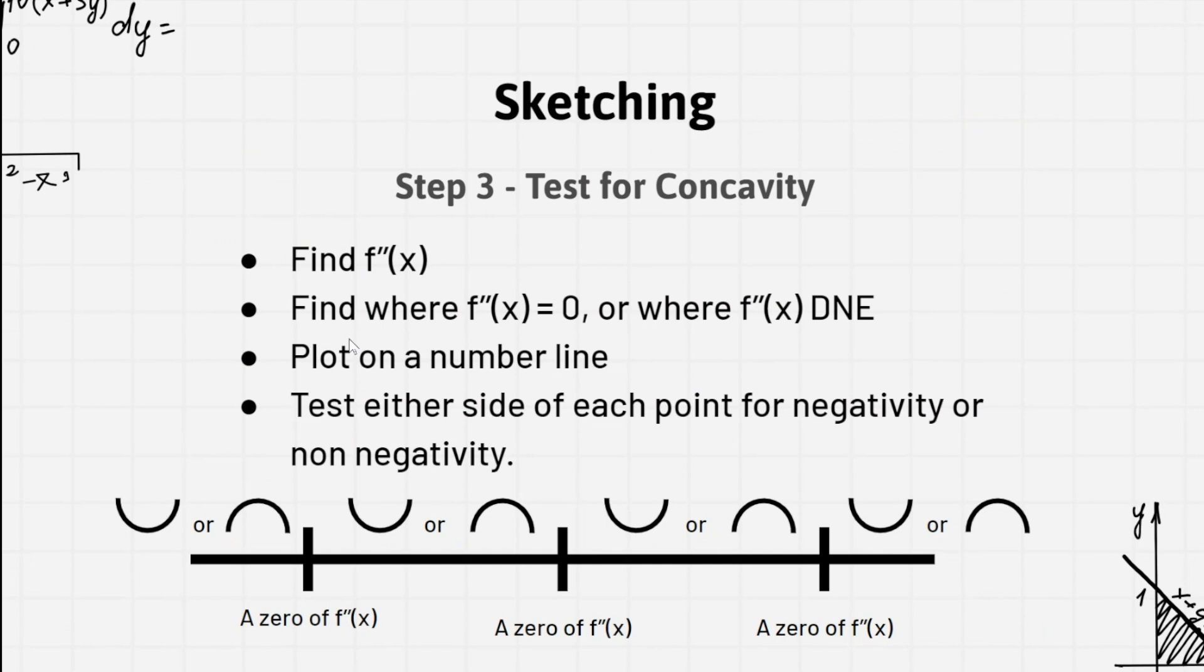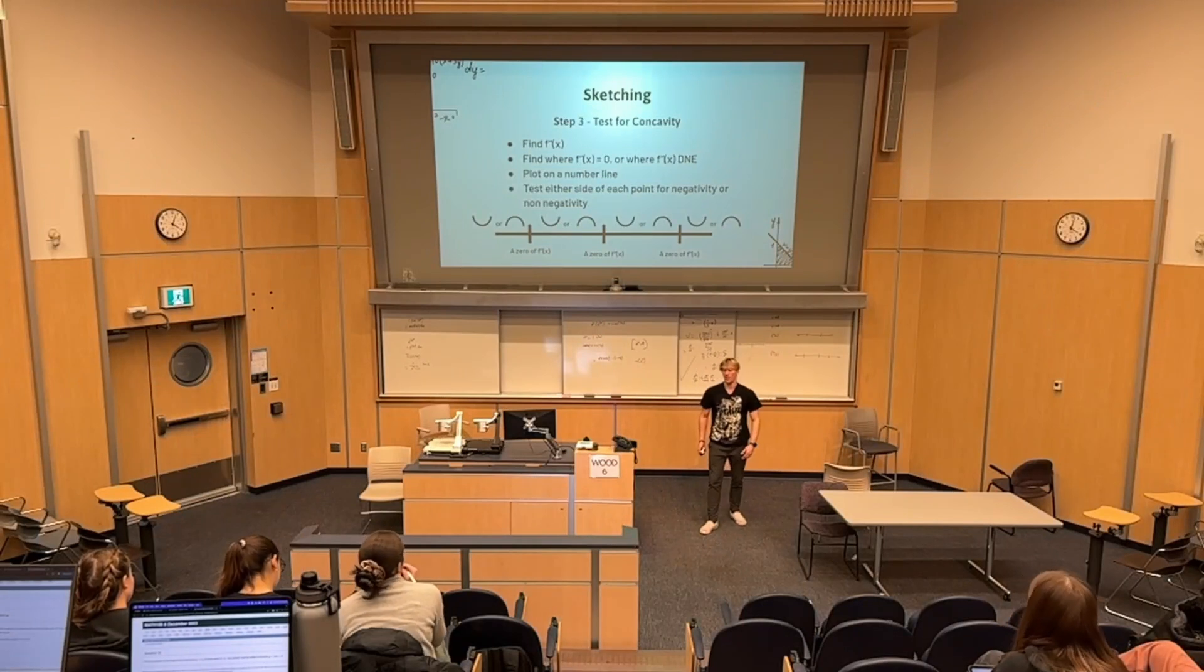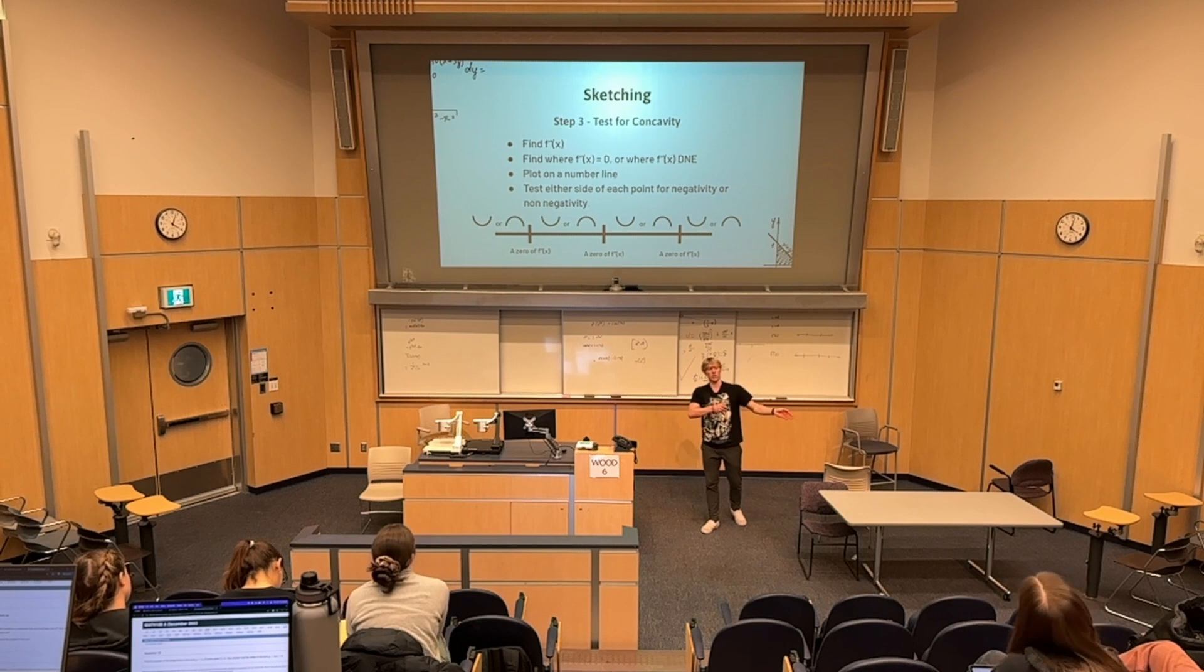Next step, take the second derivative. Again, find where it's zero, or also where it does not exist. Because that is a potential for an inflection point, which is what we're looking for. Again, you're going to plot it on a number line and then test the negativity once again. If it is positive, it's going to be concave up. If it is negative, it's going to be concave down. And then you can combine those with what you know before.